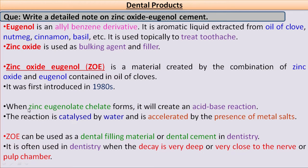When Zinc Eugenolate chelate forms, it creates an acid-base reaction. This acid-base reaction is catalyzed by water and can be further increased by the presence of metal salt.